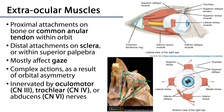Most of the extraocular muscles are innervated by cranial nerve 3, which is the oculomotor nerve — aptly named. The superior oblique muscle is innervated by the trochlear nerve, and the lateral rectus by the abducens nerve.